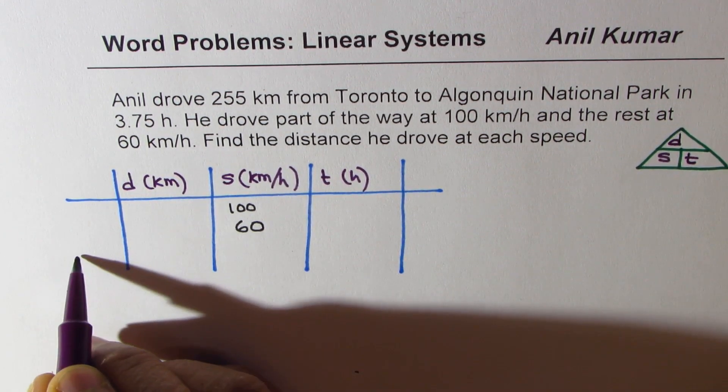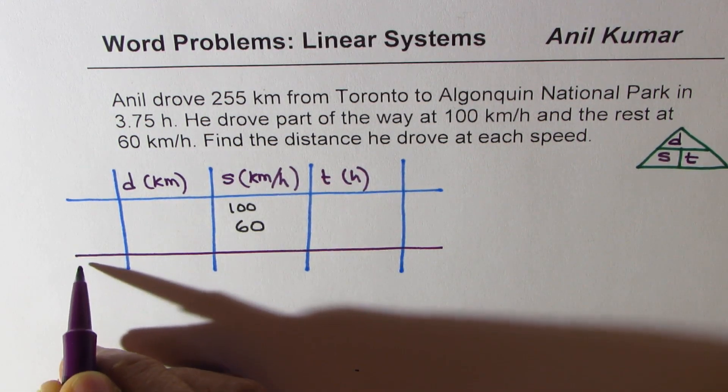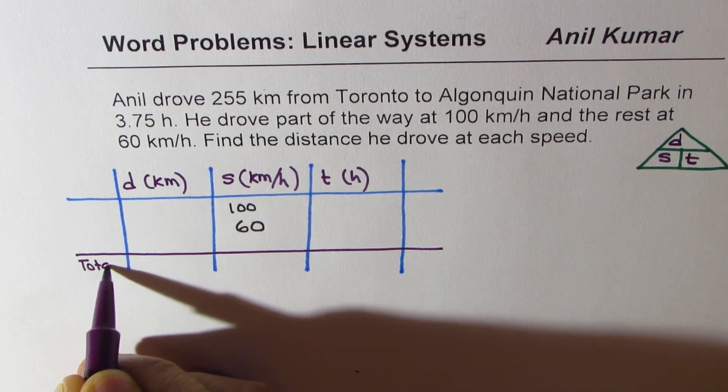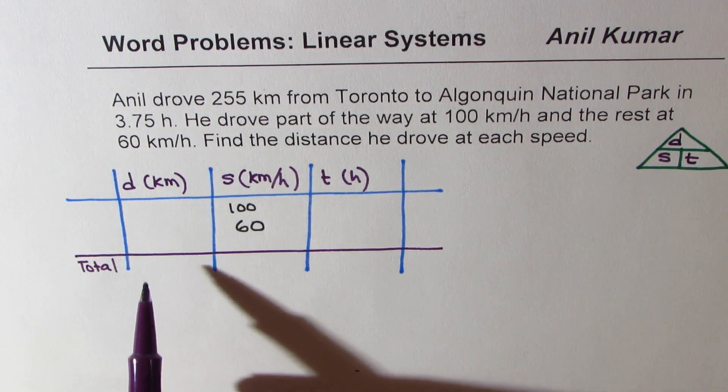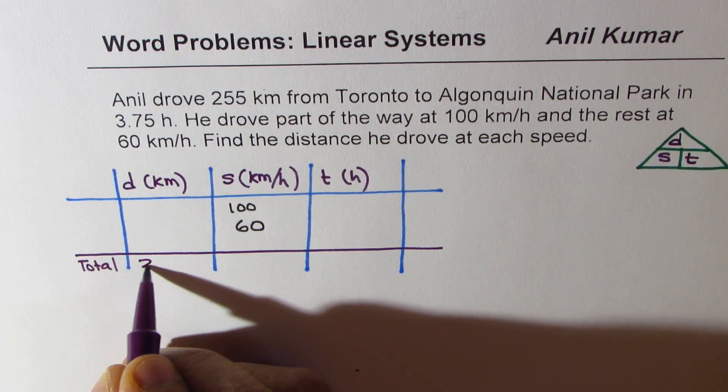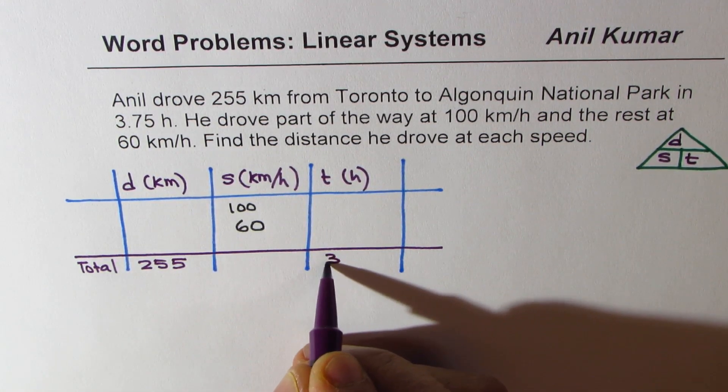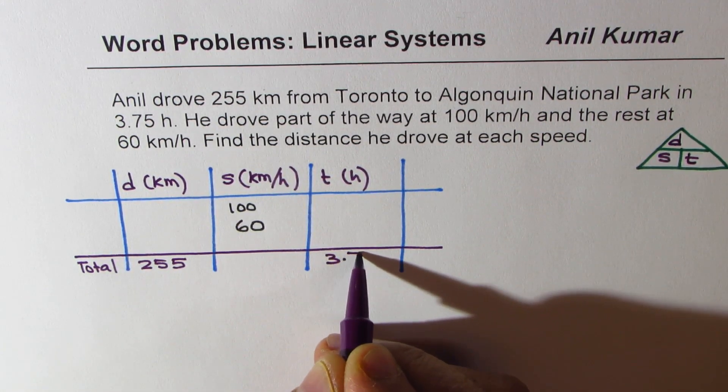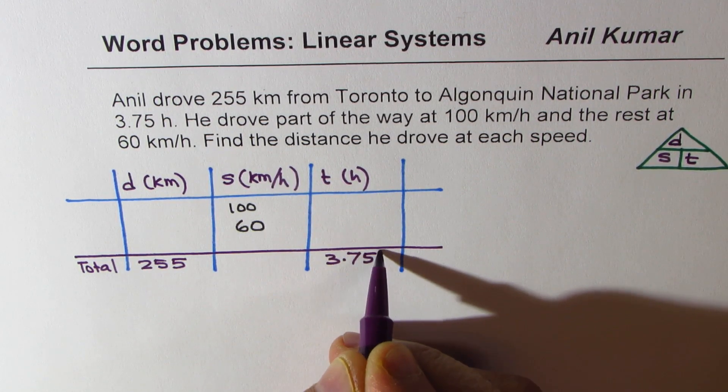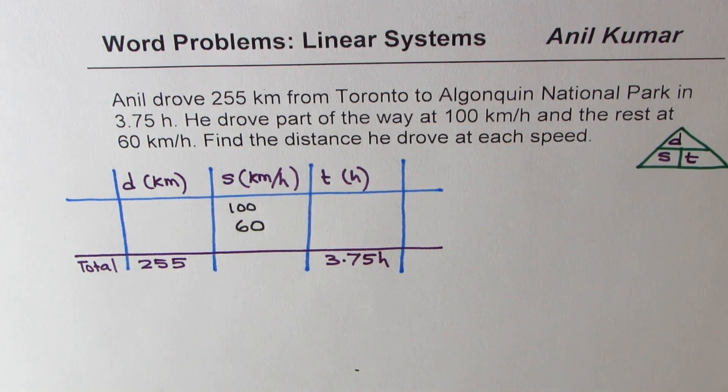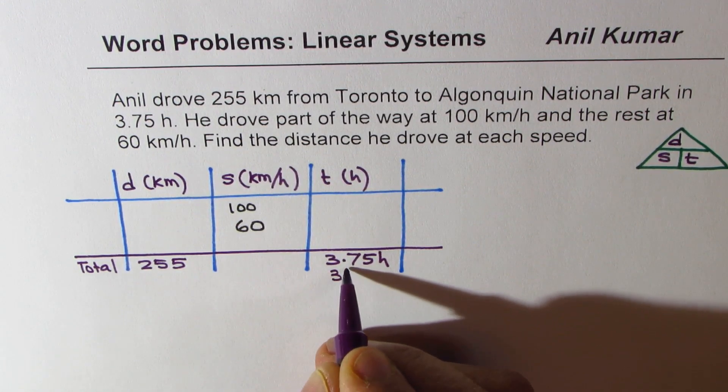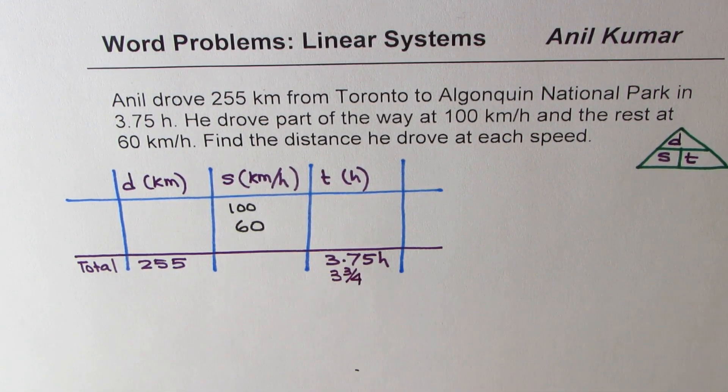We are actually given total distance and total time. So let me call this column as total. Here we are given total distance of 255 and total time of 3.75 hours, 3 and 3 fourths. That is to say 3 and 3 fourths, 15 minutes less than the 4th hour. That's what it means.